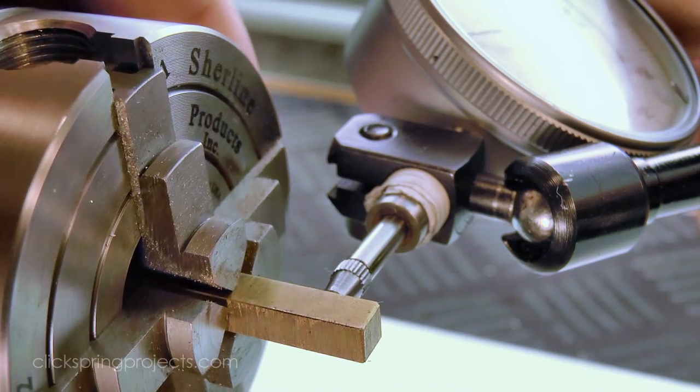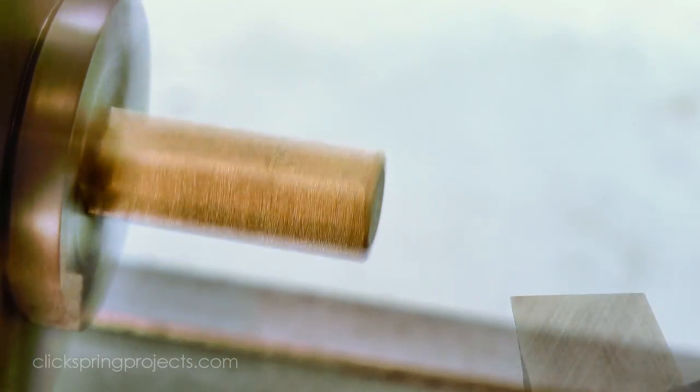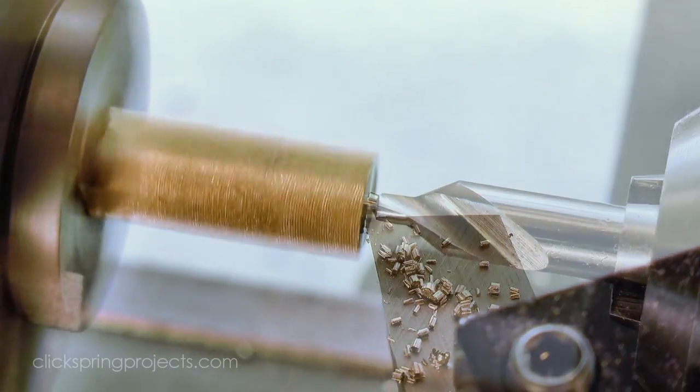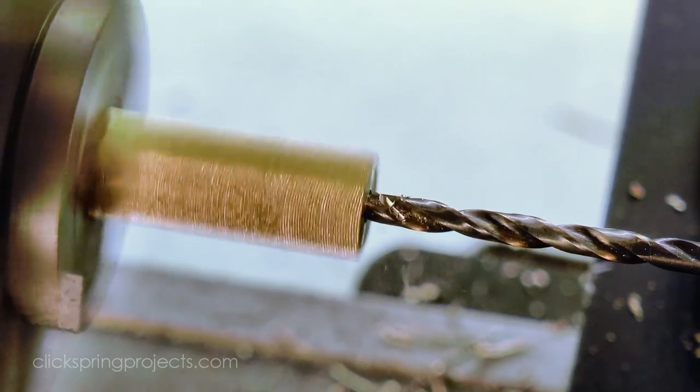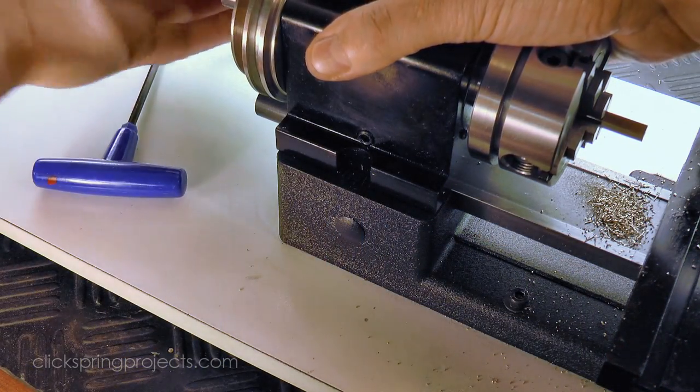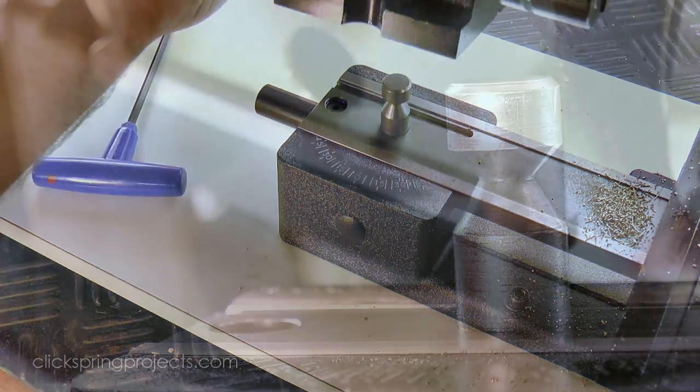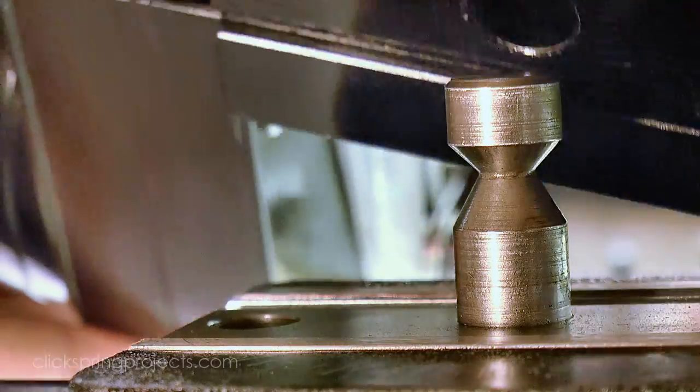Once centered in the four jaw chuck, I gave the stock a quick facing cut and then formed the central hole that'll accept the crutch arm. Next I removed the headstock and set up the lathe for its rather unusual method of forming a taper, in this case an included angle of 20 degrees.